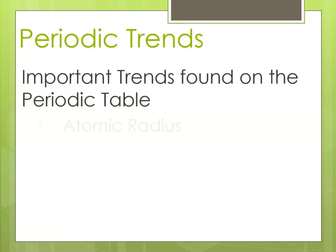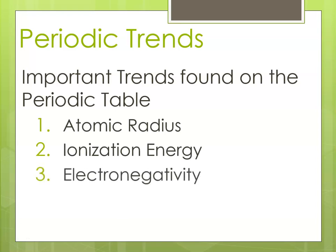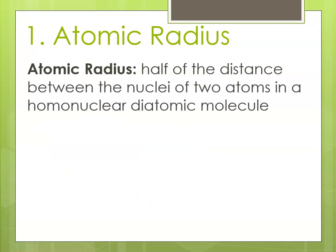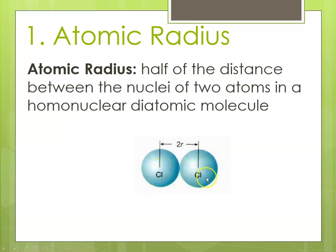There are important trends that we will follow: radius, ionization energy, electronegativity, and metallic character, and I will define them one at a time. The atomic radius is defined as half the distance between the nuclei of two atoms in a homonuclear diatomic molecule. For example, chlorine exists as Cl2, and so if the nuclei are here and here, then half that distance is the atomic radius.